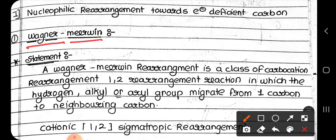Now, this is a rearrangement reaction. Before starting this topic, we must know what rearrangement reactions are. Rearrangement reactions are reactions in which some atoms or a group of a substrate shift or migrate from one position to another position within a molecule, giving rise to a product with a new structure. So the Wagner and Meerwein rearrangement reaction is a kind of rearrangement reaction.